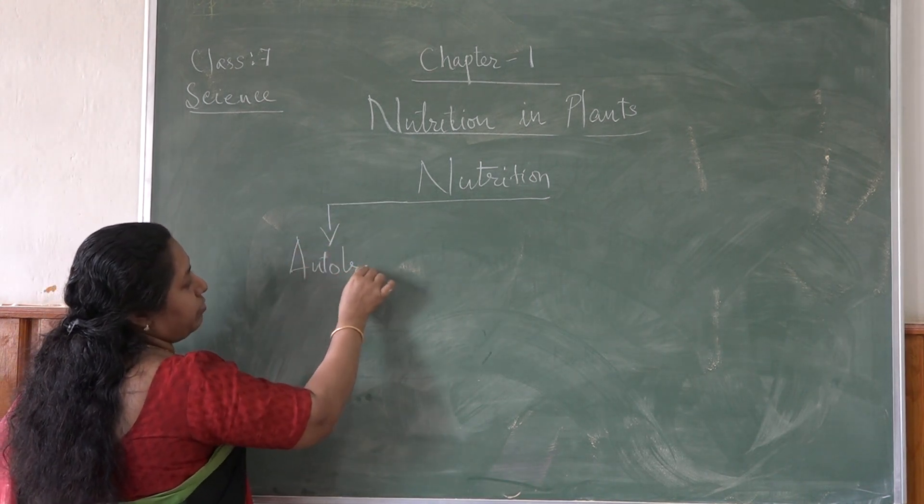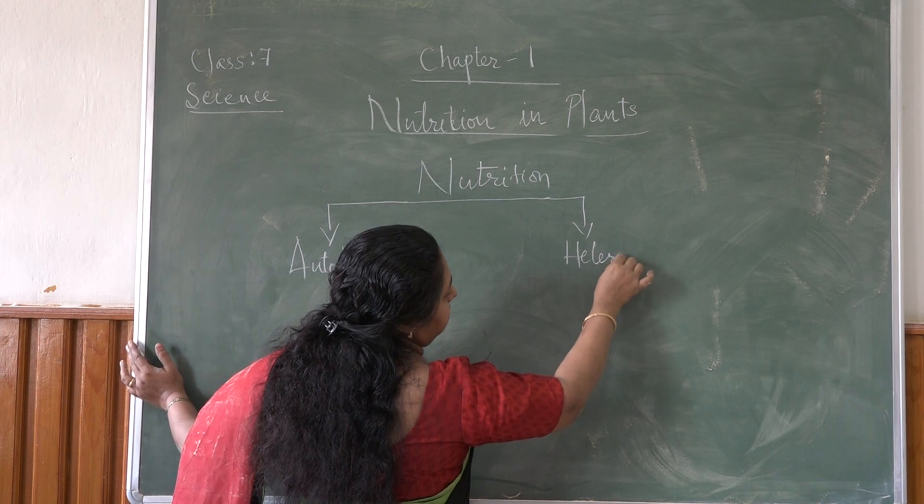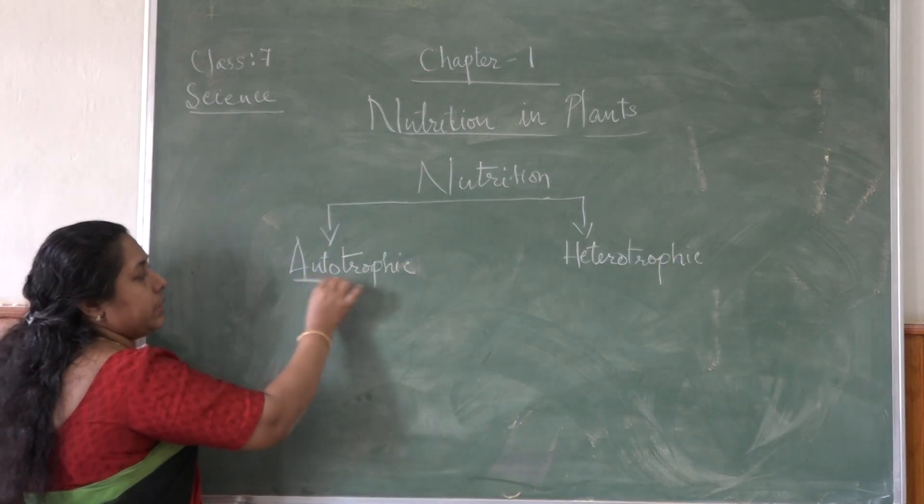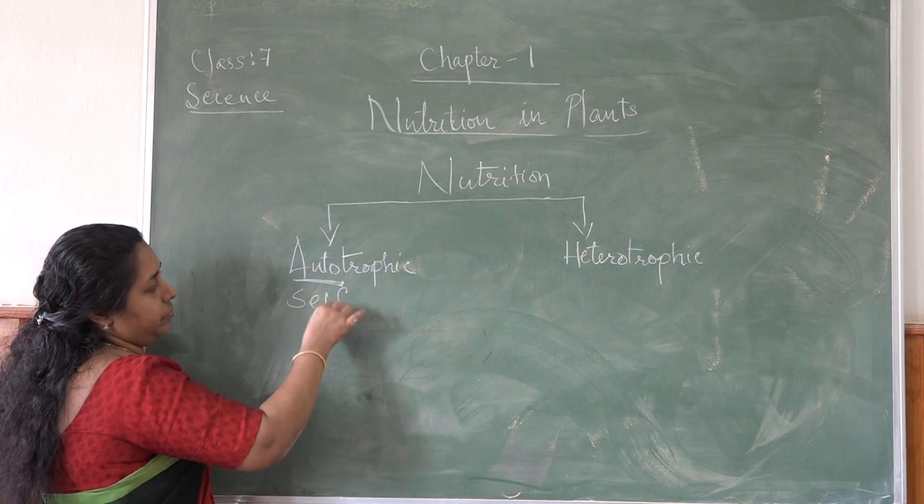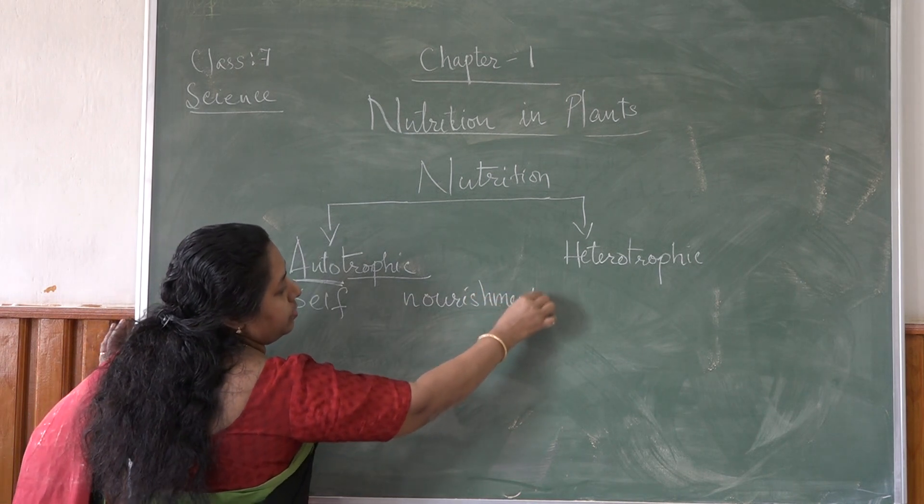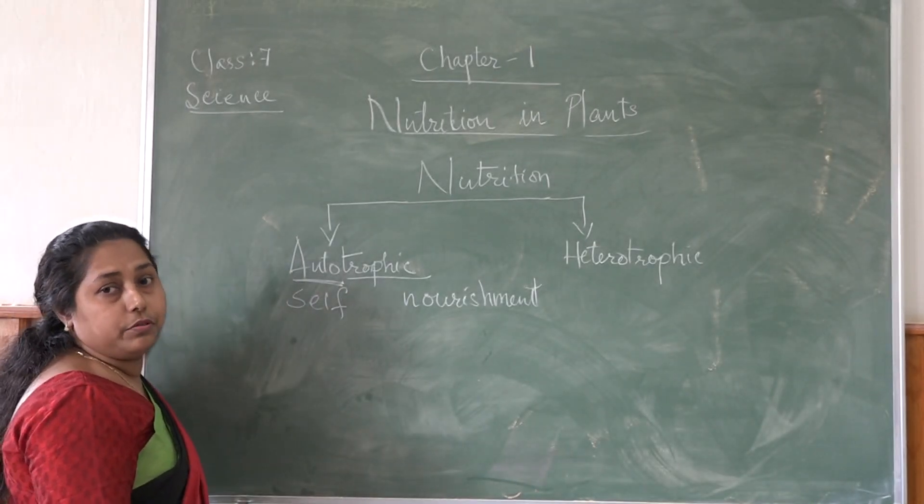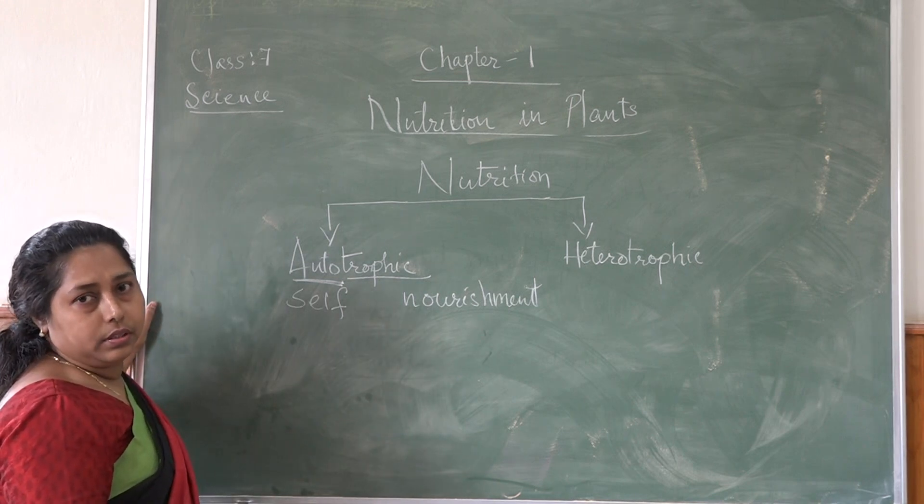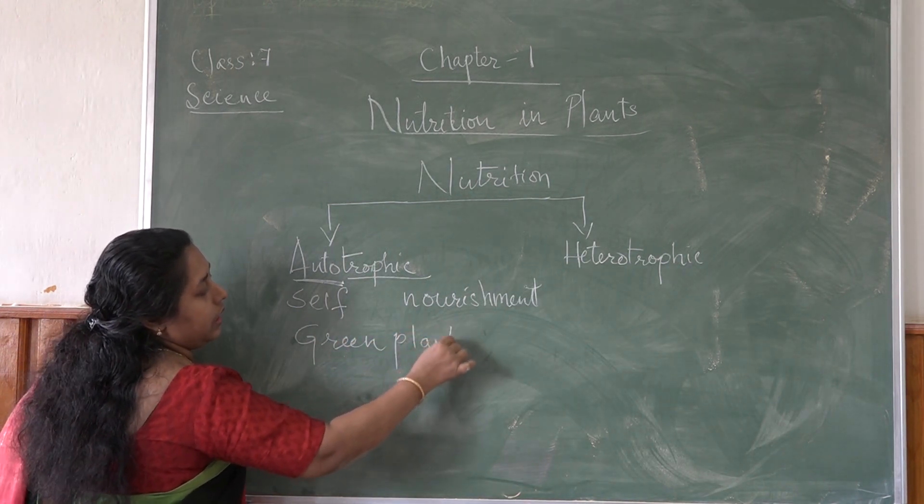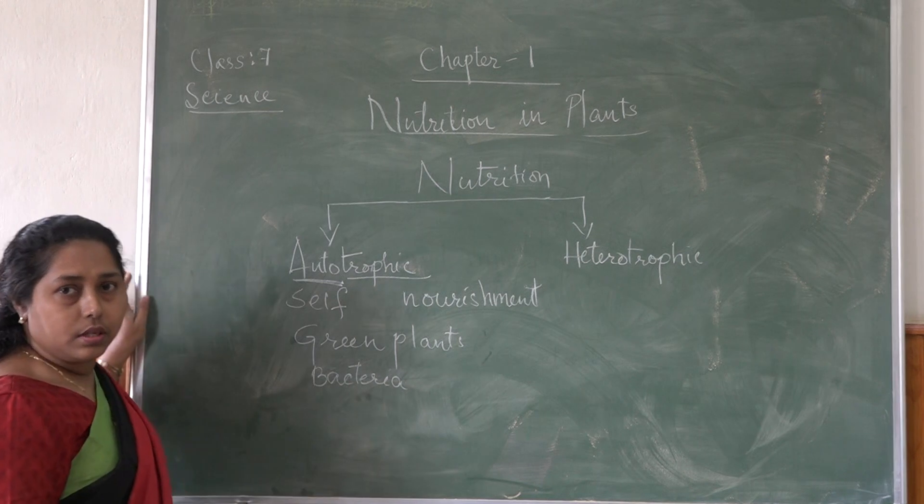One is autotrophic and the other one is heterotrophic. Autotrophic - auto, the word itself means self. Trophic means nourishment or nutrition. So self-nourishment. Those organisms which can prepare their own food is called autotrophic nutrition. Mainly green plants and some bacteria are autotrophic. They are also known as autotrophs.